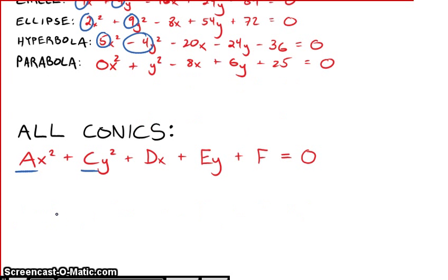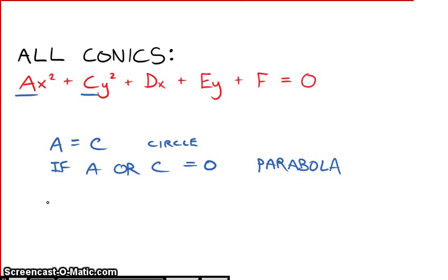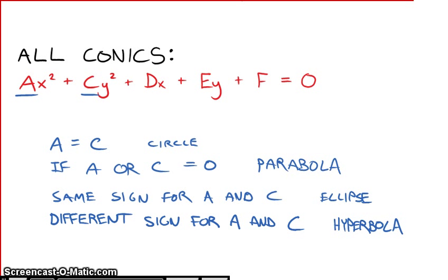In summary, if A is equal to C, that is a circle. If A or C is equal to zero, you have a parabola. If A and C are different, then you either have an ellipse or a hyperbola. Same sign for A and C, you have an ellipse. If the signs are different, then you have a hyperbola. If the signs for A and C are different, you have a hyperbola.